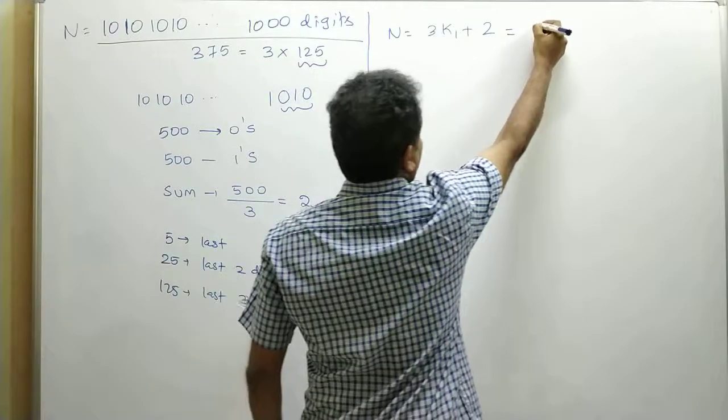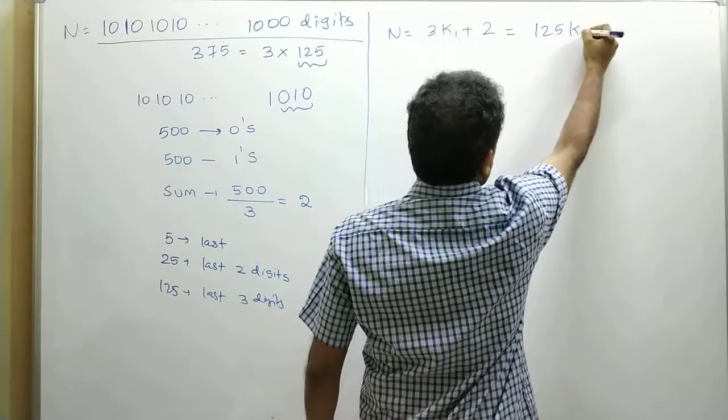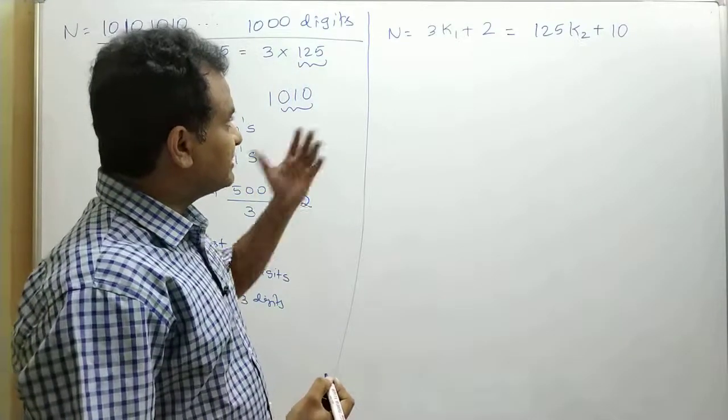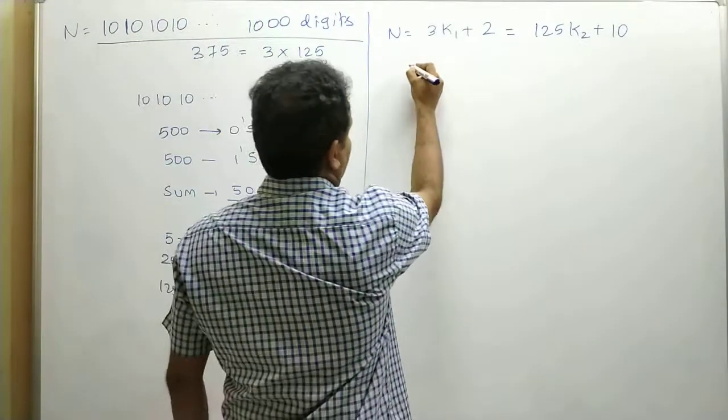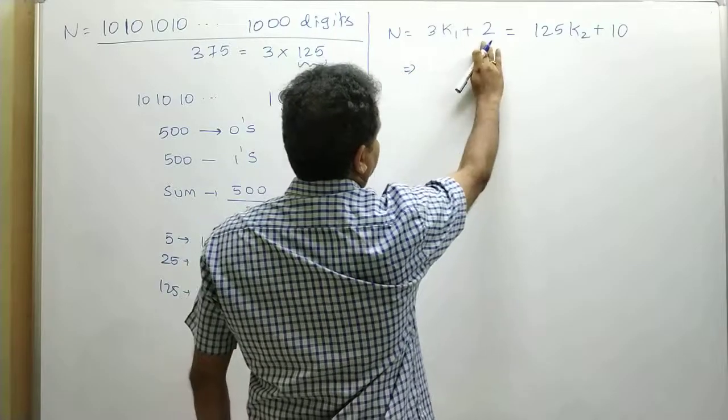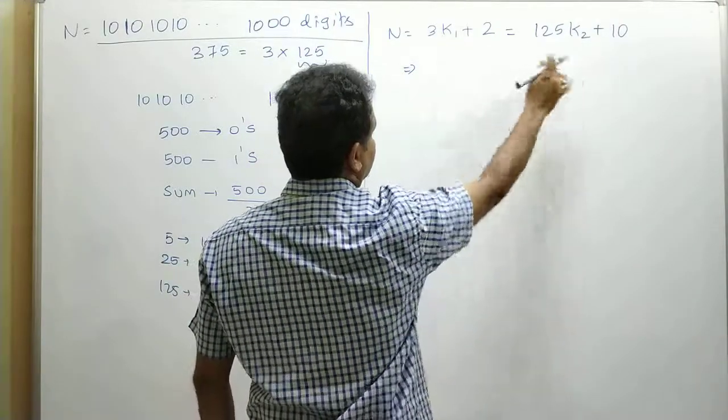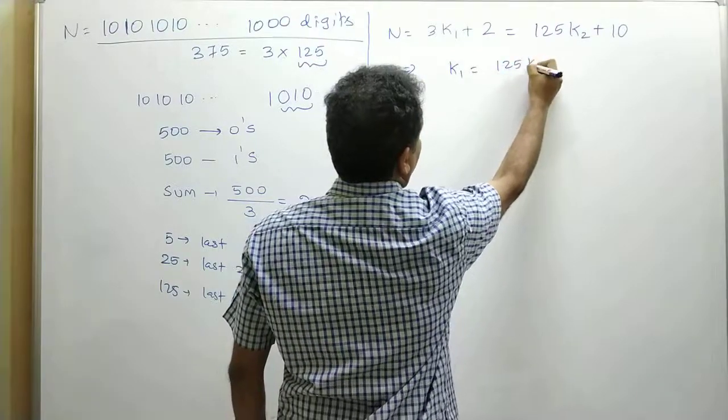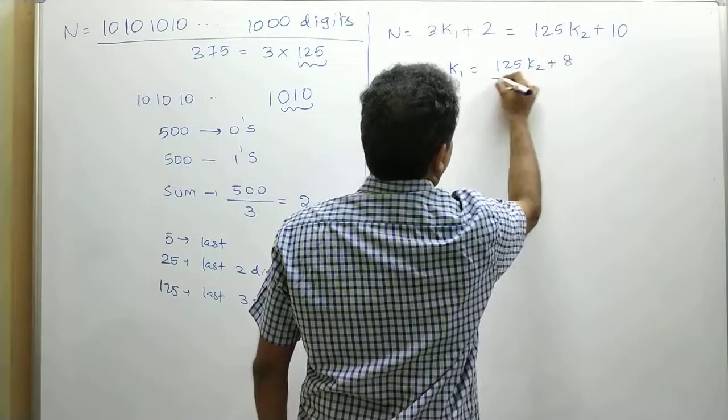Therefore, n can be again written as 125k₂ plus 10. So we need to find the least number that satisfies this condition. To find that, send these 2 to the other side, bring 3 to the denominator. Therefore, k₁ equals 125k₂ plus 8 divided by 3.